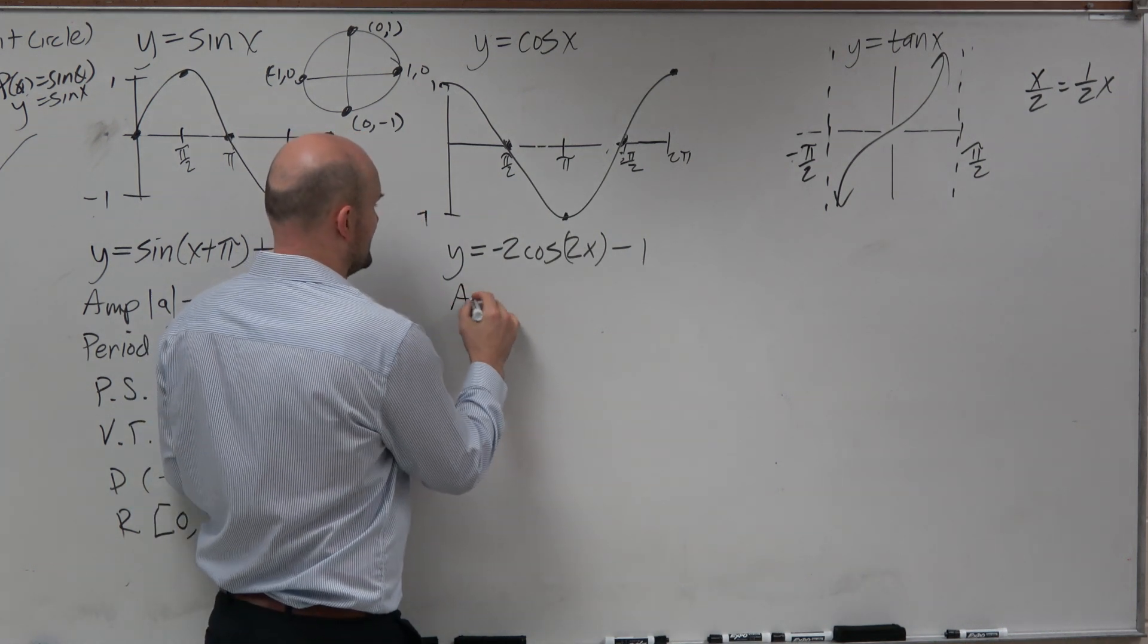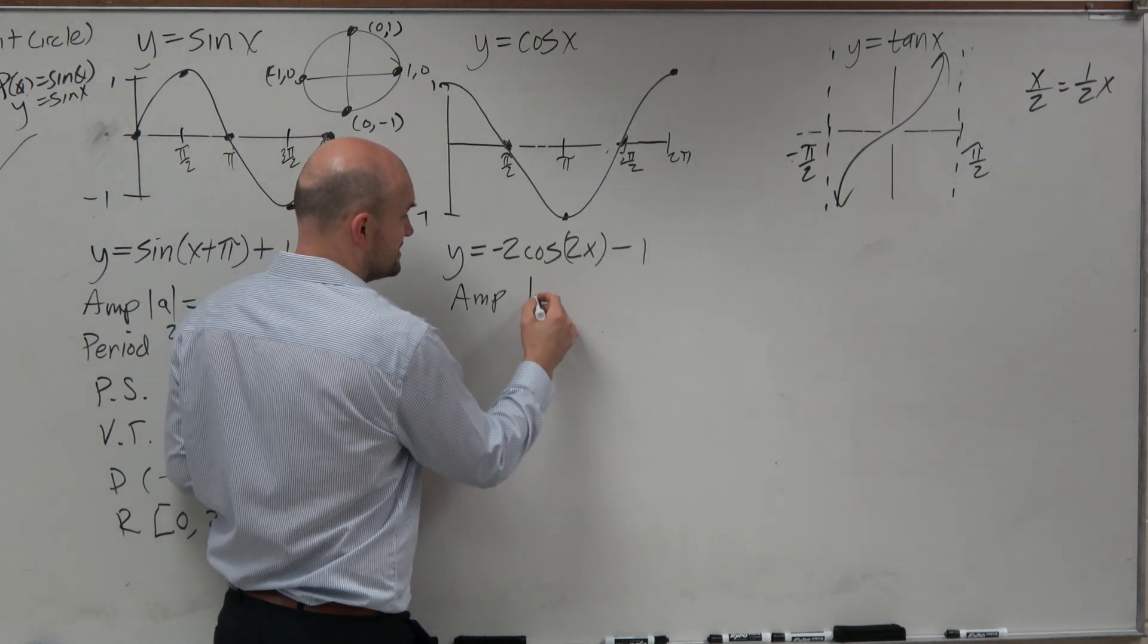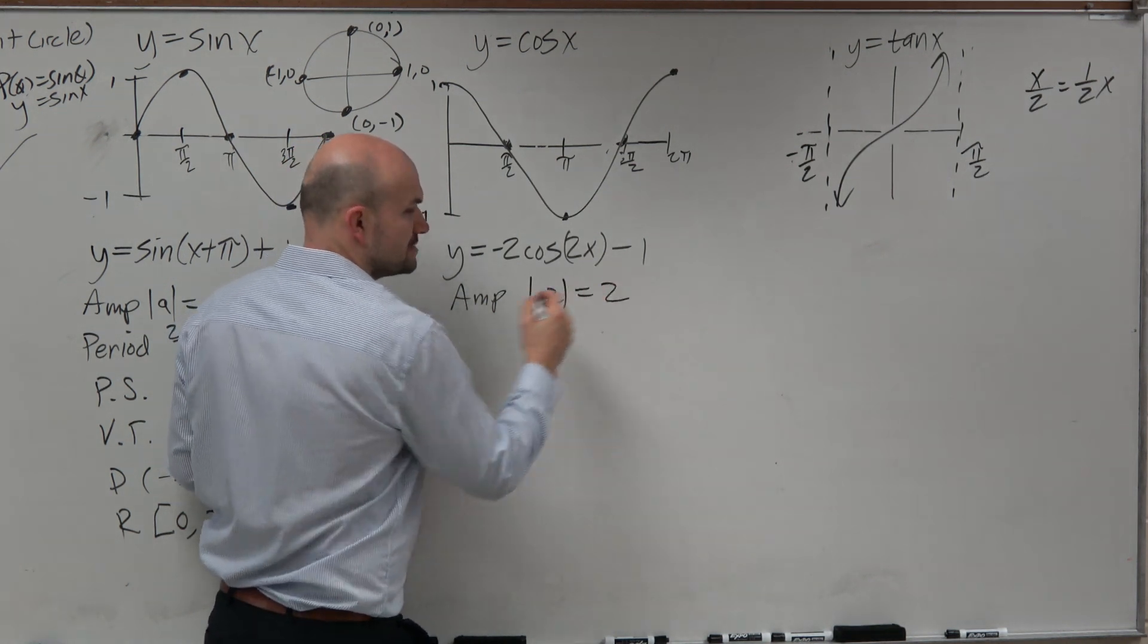So in this case, we have the amplitude is just the absolute value of a, which in this case is negative 2, so that's just 2, right?